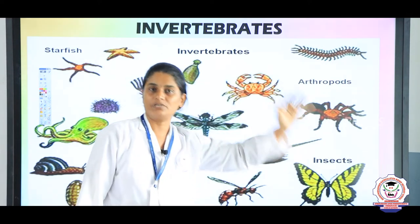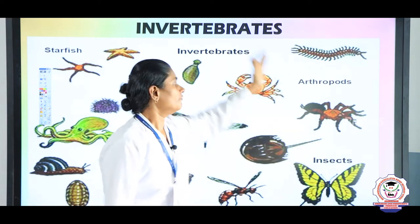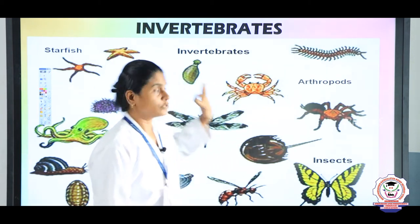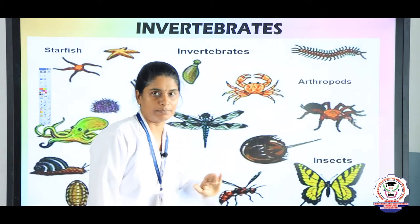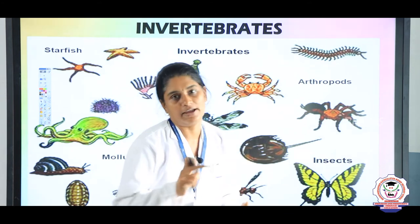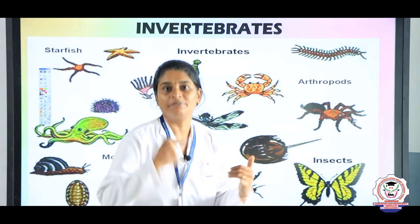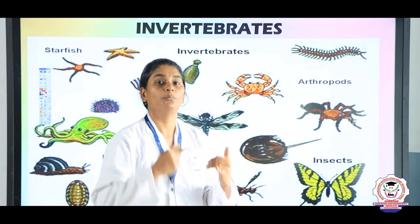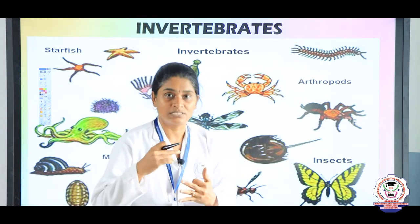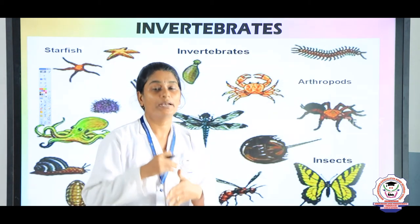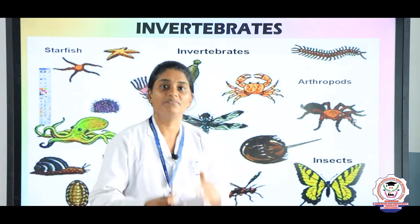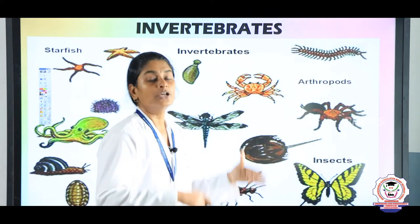Most insects come under invertebrates. Invertebrates do not have a backbone, and they are classified into eight phyla. The eight phyla we discussed in the first part are Porifera, Annelida, Arthropoda, Coelenterata, Nematoda, Platyhelminthes, and Echinodermata. In this class we are going to discuss each of these in detail.